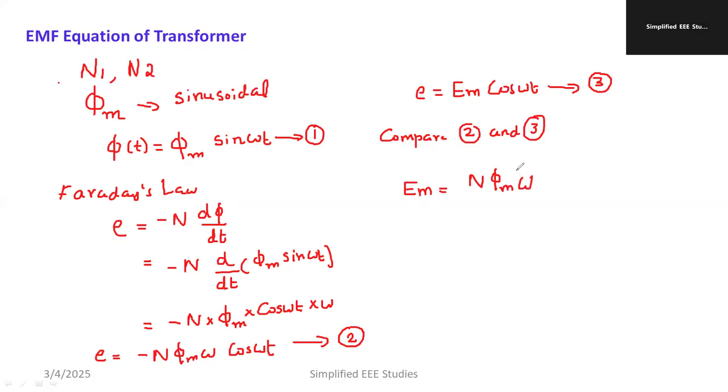Let us write the RMS value. You already know that the root mean square value, better you can convert to RMS quantity. E_rms equals E_m divided by square root of 2. That is a standard formula. That is N * phi_m * omega divided by root 2.